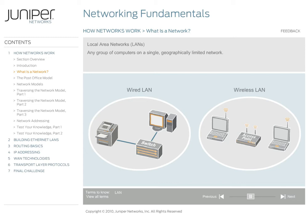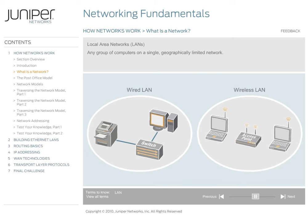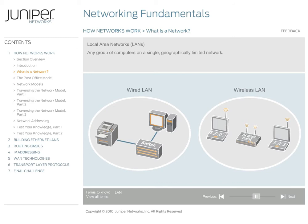There are two basic kinds of networks. Any group of computers on a single geographically limited network is called a local area network or LAN. LANs allow users to exchange documents and share resources such as printers or file servers. A LAN can be either wired or wireless or a combination of both. We discuss the different LAN components and how information is sent from one computer to another later in this course.